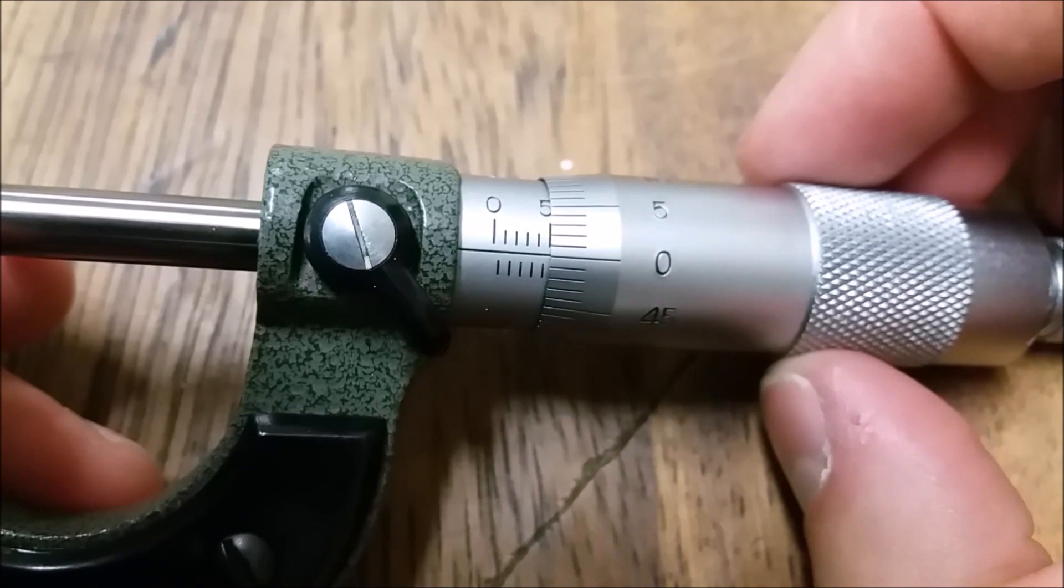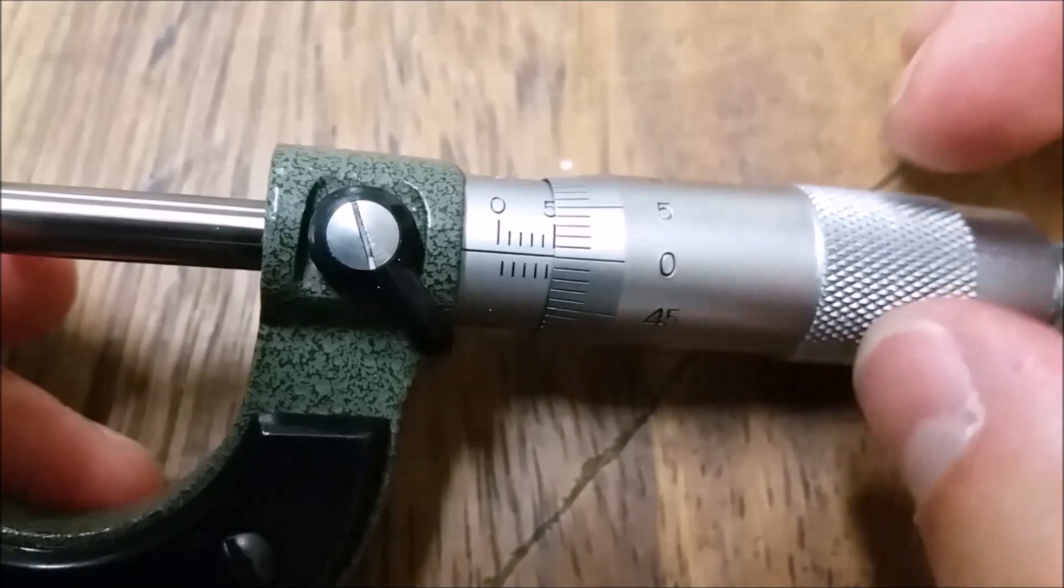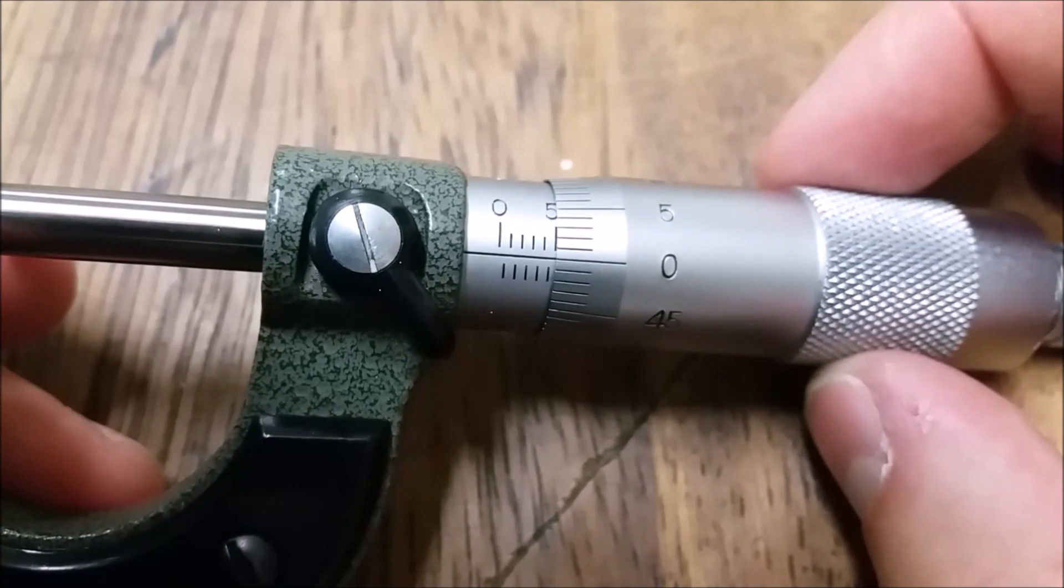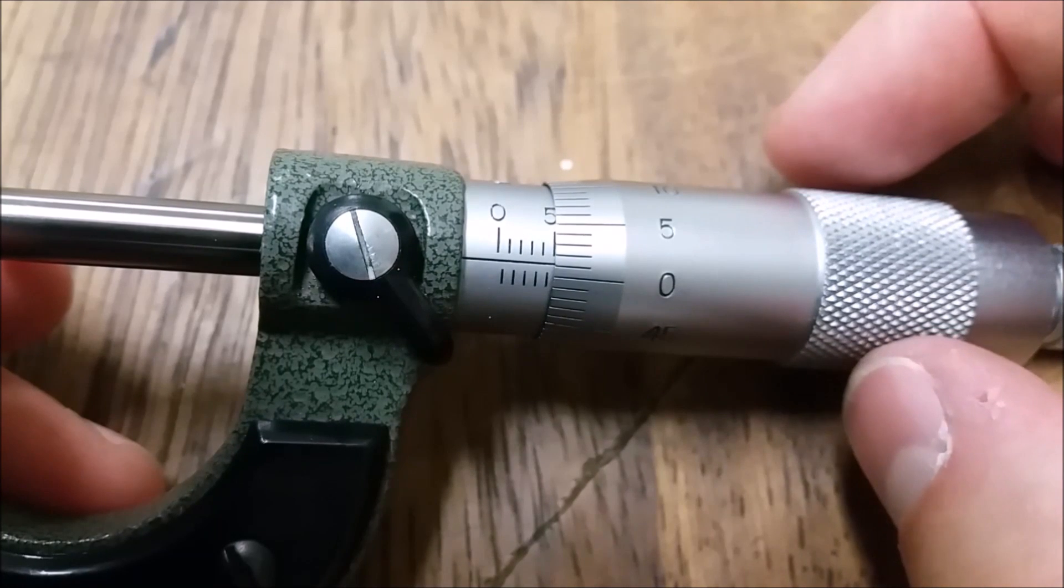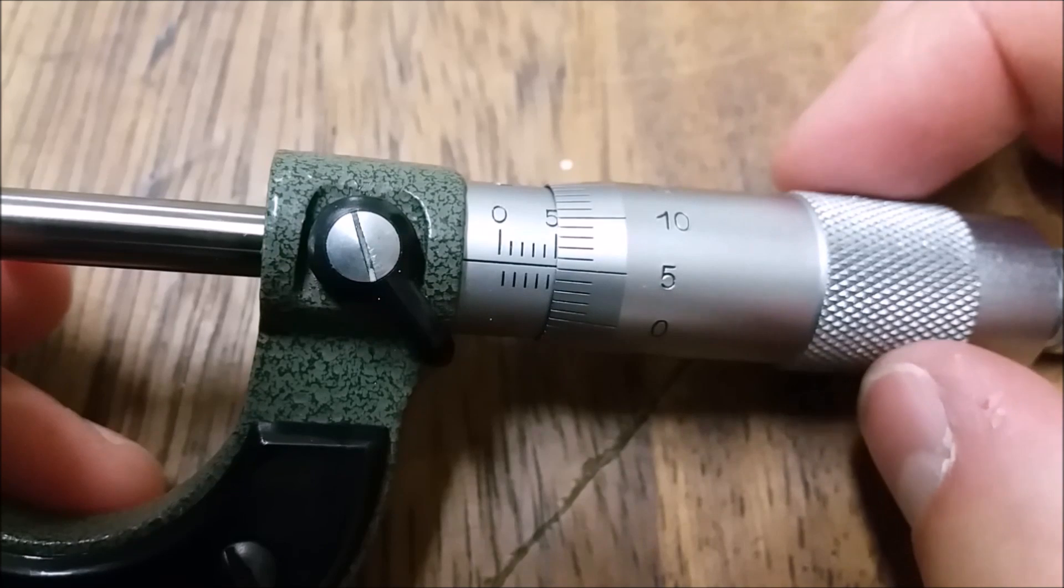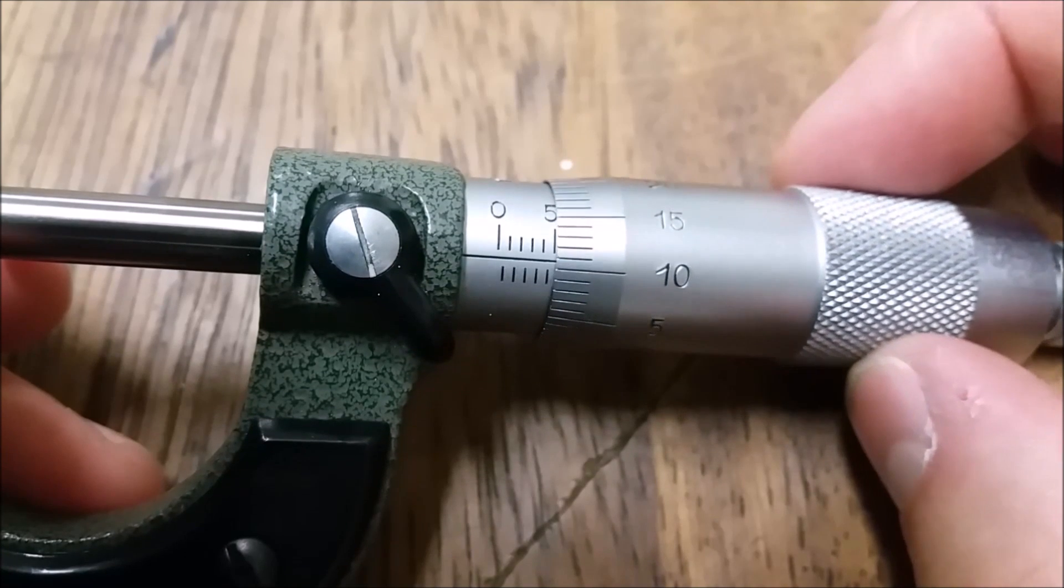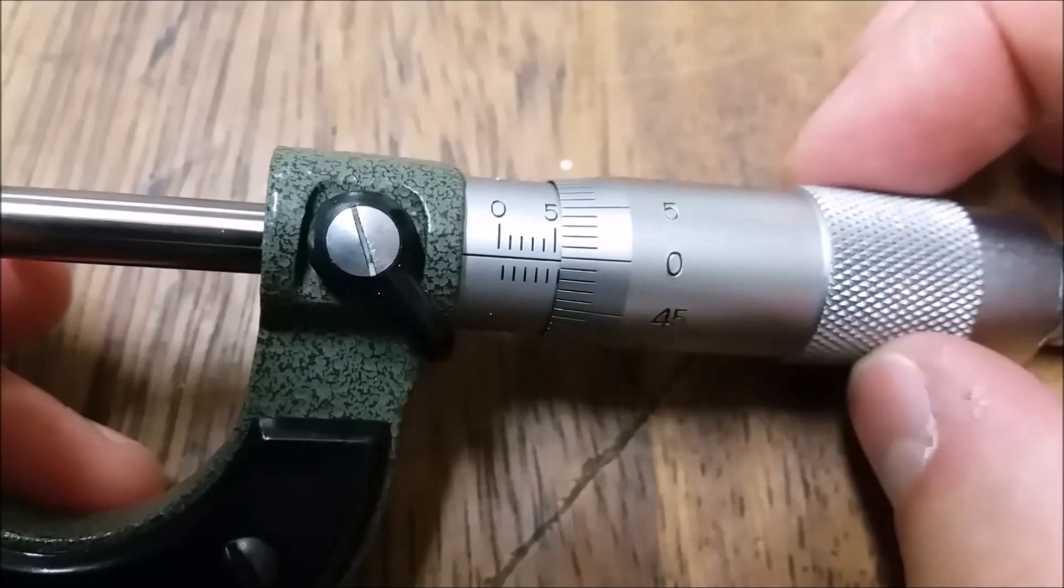For example, here we're starting at five millimetres. As you can see, the numbers on the inside cylinder read five, and we're bang on zero here with our hundredths of a millimetre. This is five millimetres. This is five point zero one millimetres. This would be five point zero five millimetres. This would be five point one one millimetres. And so on until we get to five point five.